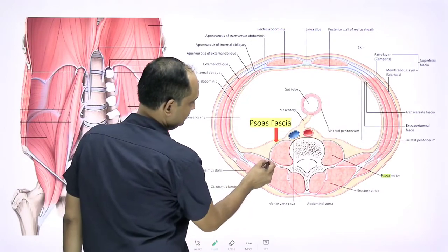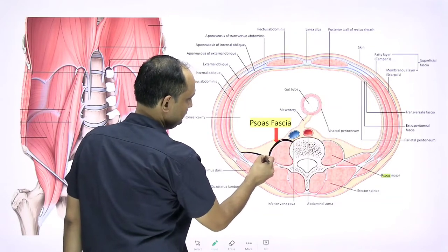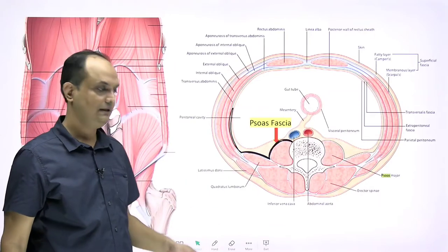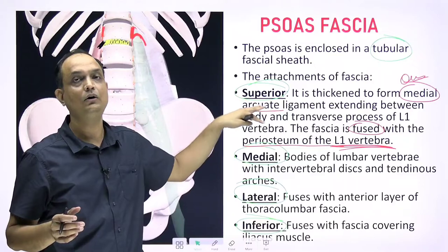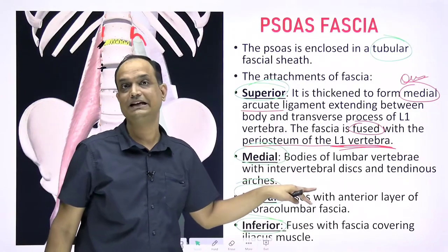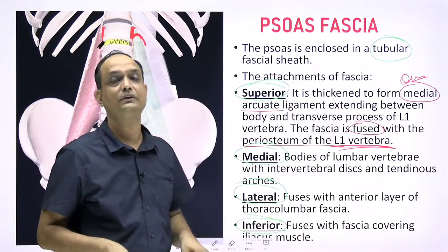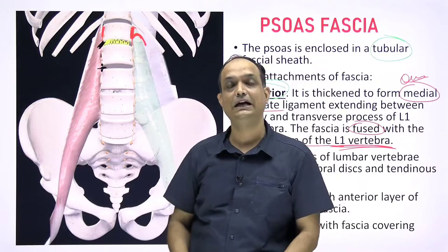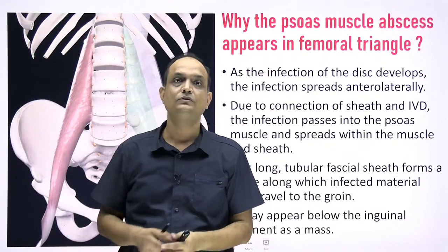Laterally, the psoas fascia fuses with the thoracolumbar fascia. In this diagram you can see the thoracolumbar fascia and the anterior layer of the psoas fascia joining with it, which continues with the fascia transversalis. So the psoas major muscle is covered by a tubular fascia that is closed superiorly by merging with the periosteum forming the medial arcuate ligament, medially by merging with the intervertebral discs and vertebral bodies, laterally by merging with the thoracolumbar fascia, and inferiorly it merges with the fascia iliaca, covering the iliacus muscle with a lower extension into the thigh.